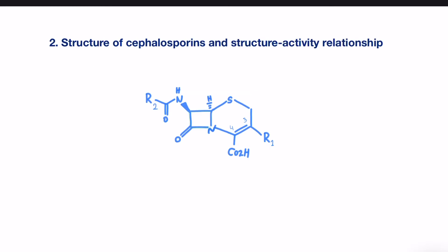The structure of cephalosporin has similarities to that of penicillin in that it has a bicyclic system containing a four-membered beta-lactam ring. But this time, the beta-lactam ring is fused to a six-membered dihydrothiazine ring.